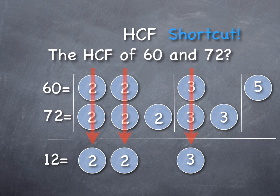Step 3: 12 is the highest common factor of 60 and 72.